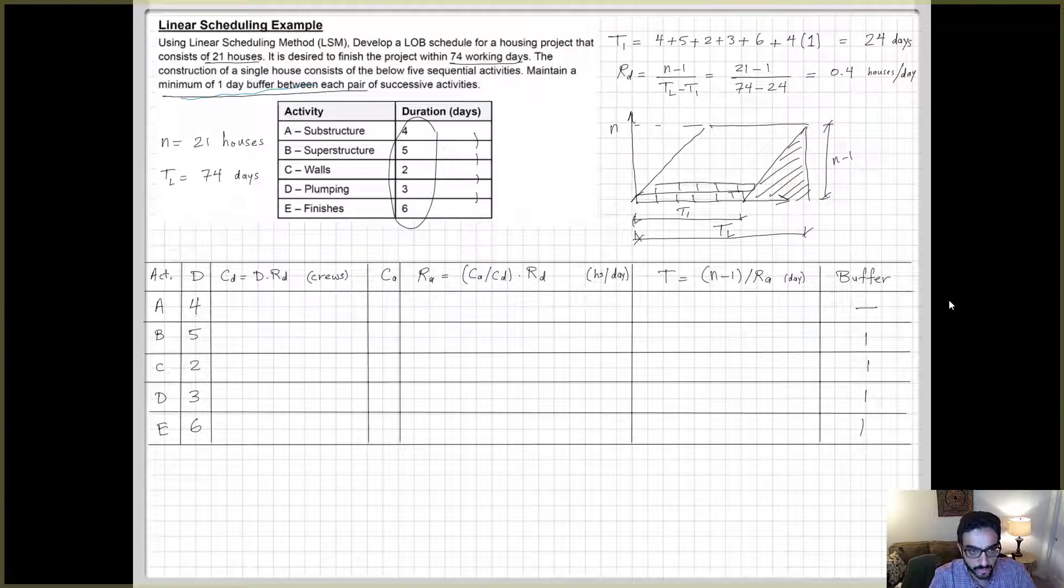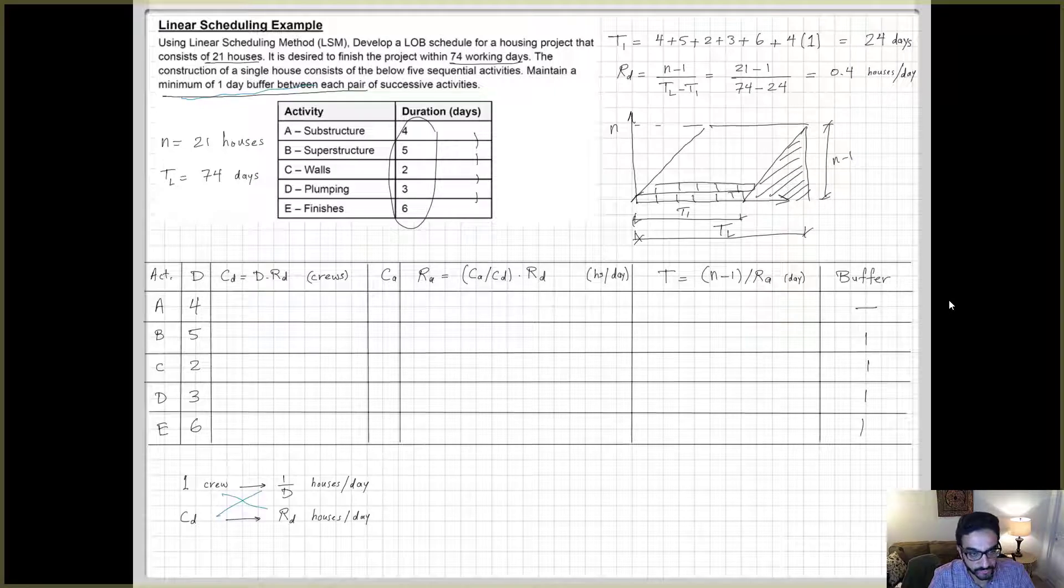Starting with the third column here, CD, which is the required number of crews that are needed to be able to achieve this overall required rate, RD. In the lecture I tried to explain how we came up with this CD value. For one crew, we will deliver one over D houses per day because if we use one crew, the activity duration will be four in the case of activity A. So thinking about how many CD, how many crews are needed to deliver RD, and considering the proportional relationship, CD will be equal to RD divided by one over D. So you will end up with RD times D.